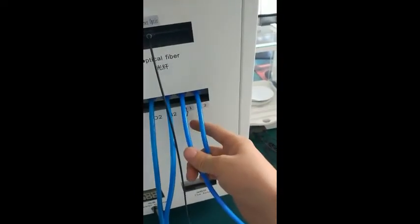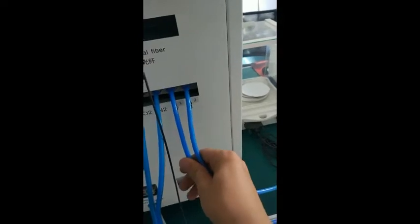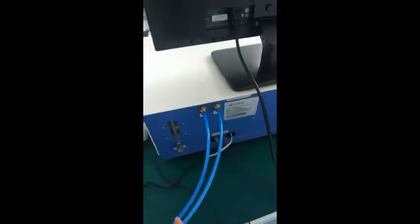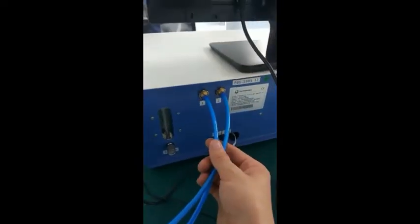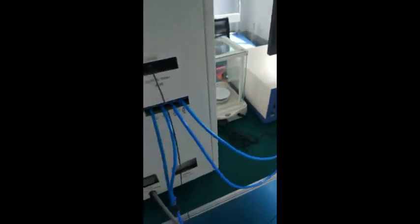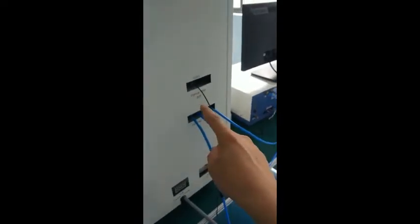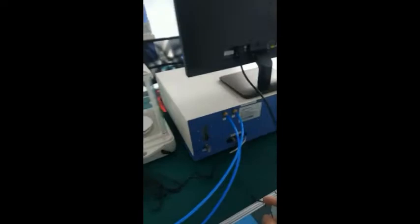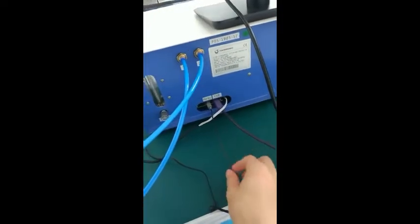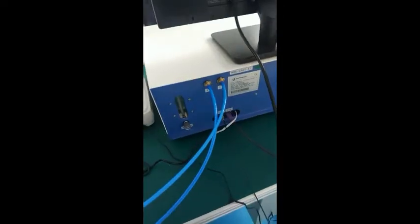Through the sign, we can see that one of the two blue gas pipes on the right is the air inlet pipe and the other is the air outlet pipe, which are marked as number one and number two respectively, which are connected to the number one and number two interfaces of the analyzer.